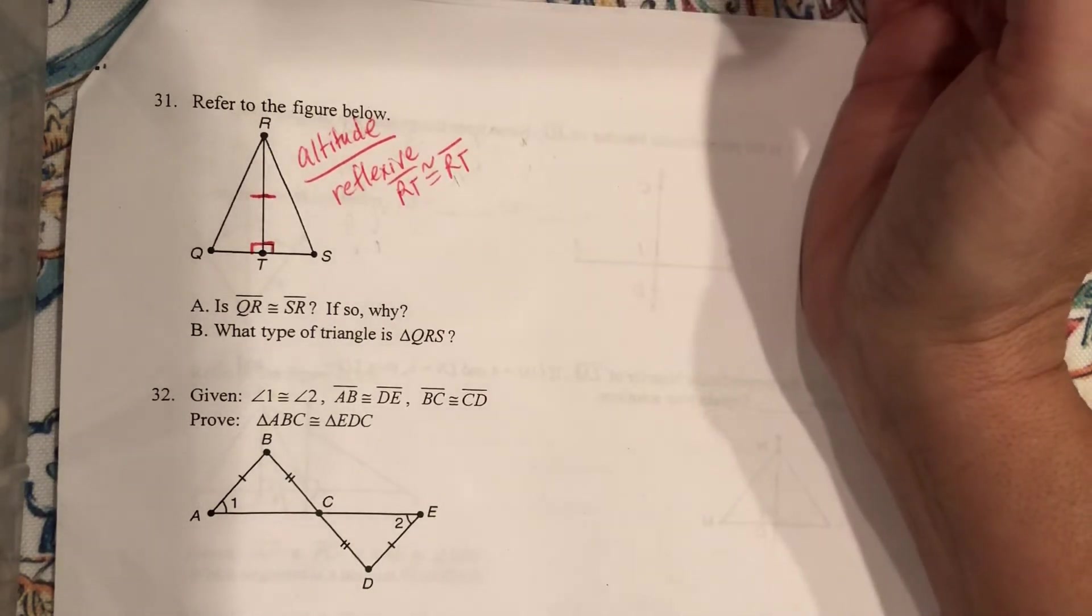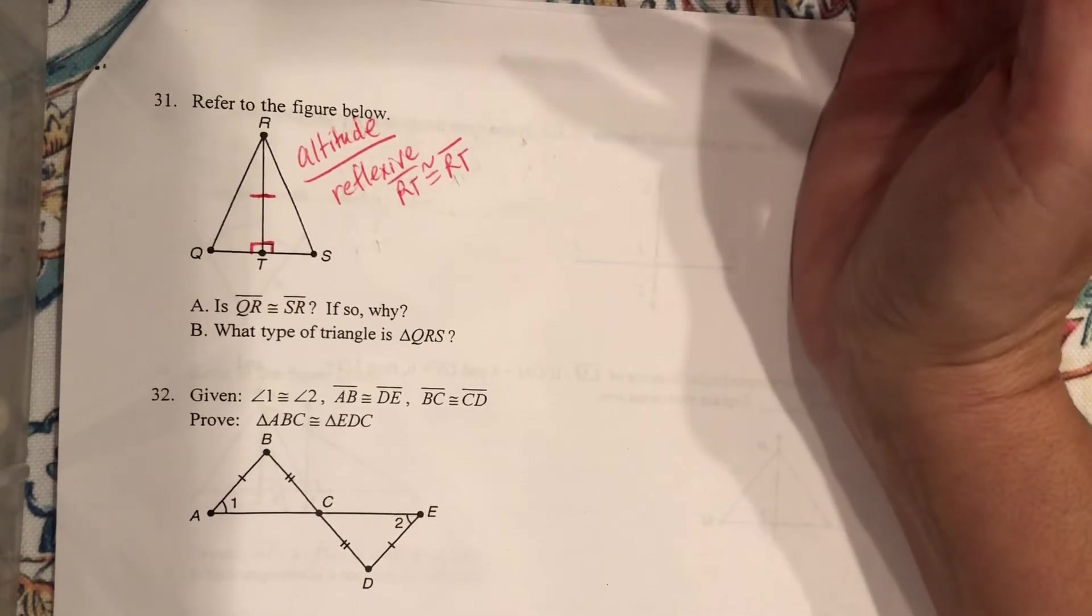But the question is, do I have anything else? Well, in order to prove two triangles congruent, you have to know three sets of pairs, right? I don't have that here.